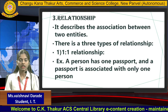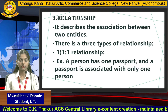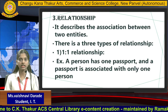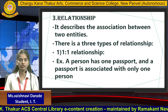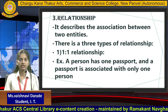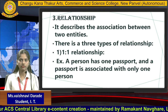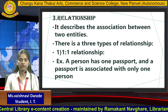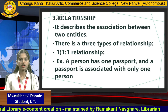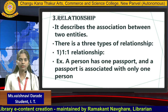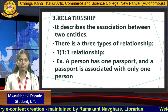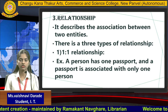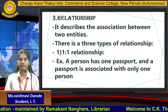Third, relationship. What is a relationship? It describes the association between two entities. There are three types of relationships. First, one-to-one relationship. For example, a person has one passport and a passport is associated with only one person.